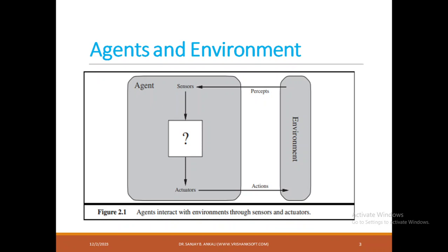This is how agent and environment looks like. There is an environment. To read the environment, there are sensors in the agent. Based on the current state of the environment, there are actuators to be applied back to the environment. For example, when there is a self-driving car moving, and the car next to it applies a braking system, this car has to understand that through the rear side lights and through the camera — it will understand that the car moving next to it has already applied the braking system.